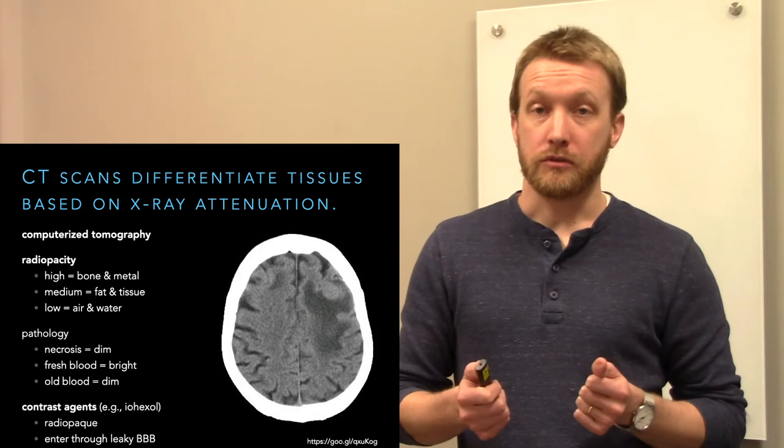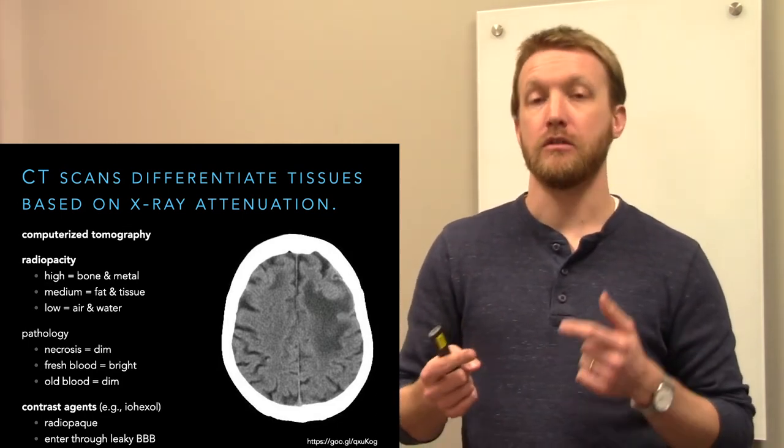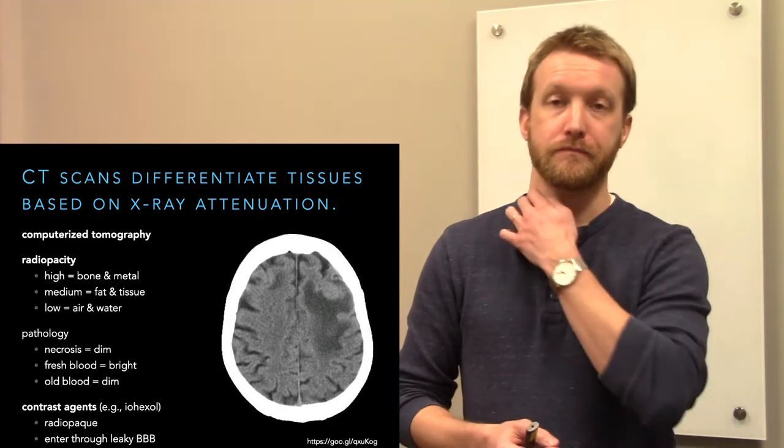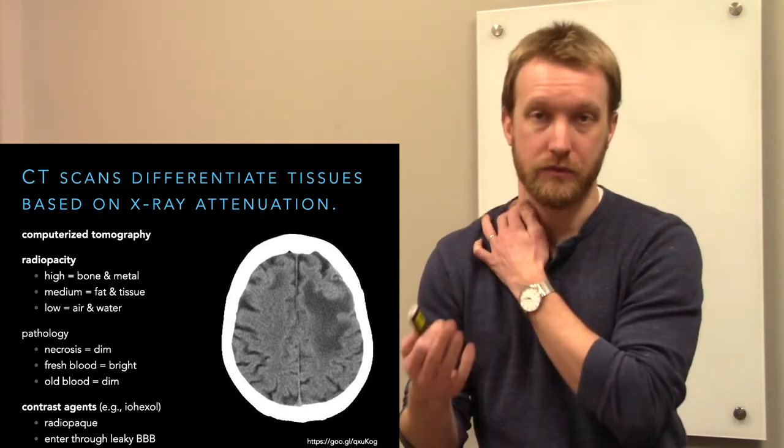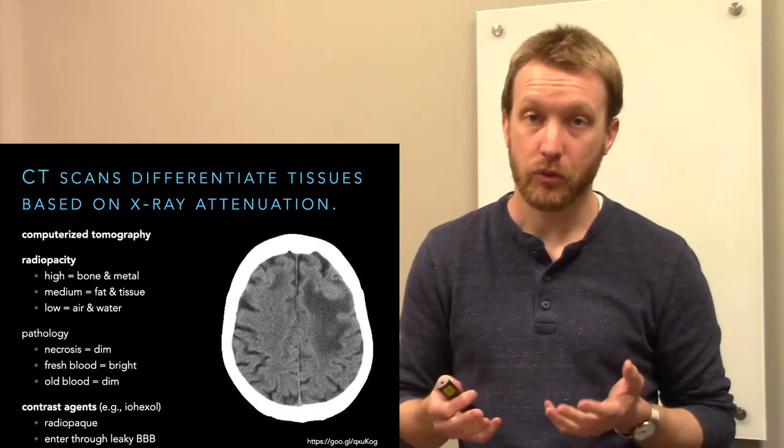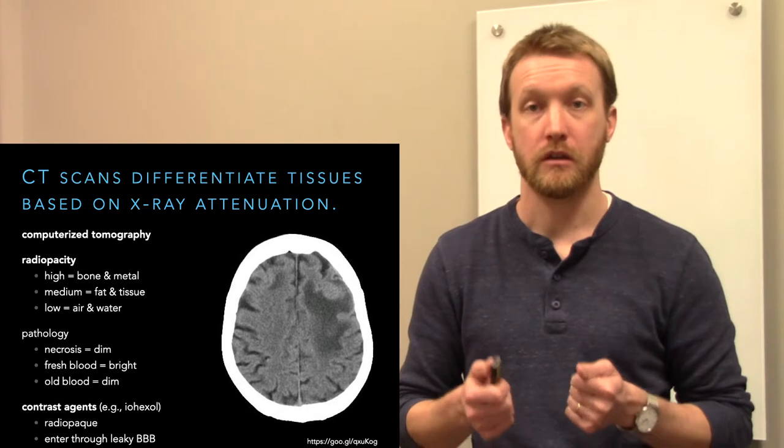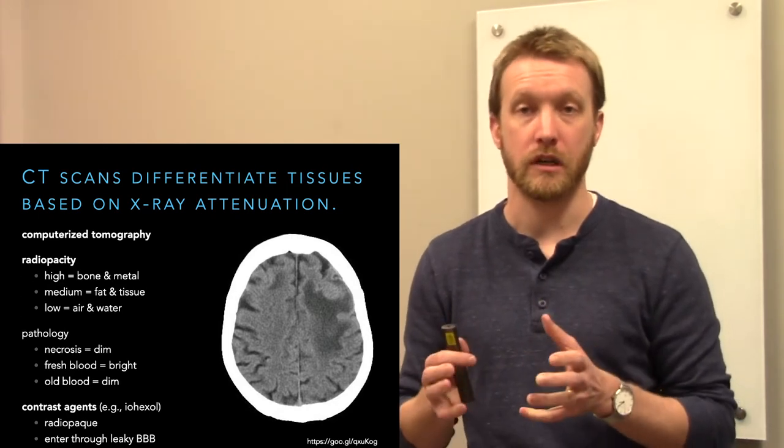Fresh blood we can also detect. Fresh blood will generally appear bright as it ages though, it becomes dim. So we can see big things with CT, such as a bleed, and that's the most important use of CT scan. In an emergency, try to get an idea of what's going on under the skull.